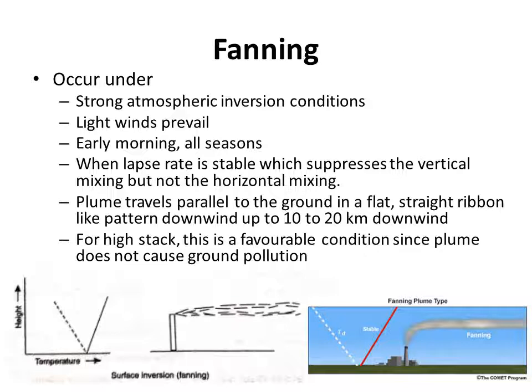The plume travels parallel to the ground in a flat, straight, ribbon-like pattern downwind up to 10-20 km. For high stacks this is a favorable condition since the plume does not cause ground pollution. As seen in the figure, the plume is carried as a straight ribbon up to 10-20 km, remaining at such a high level that it does not create much pollution at ground level.